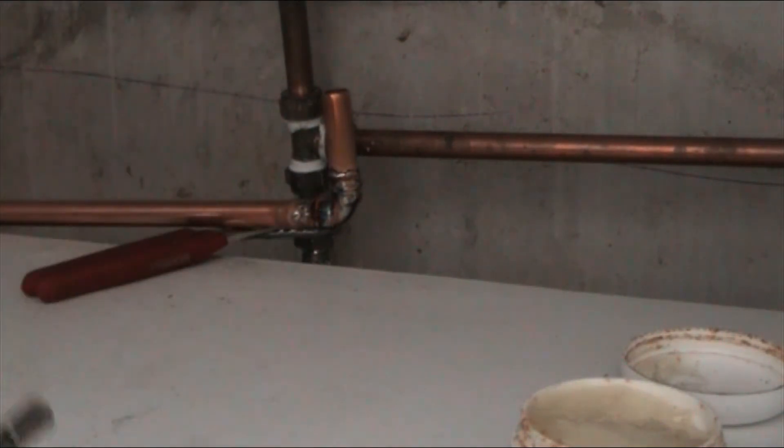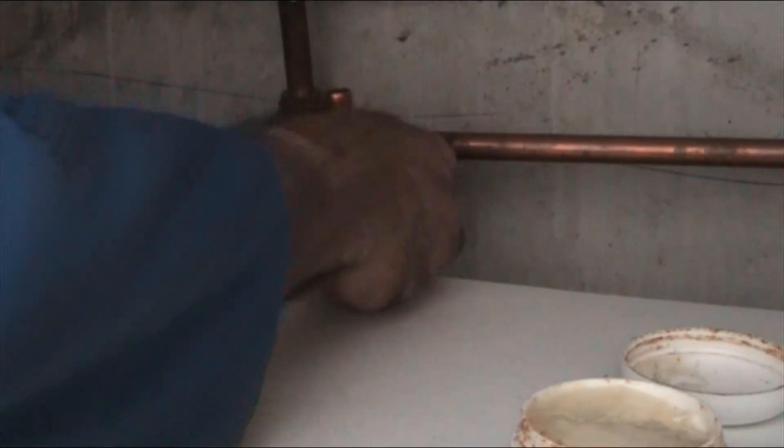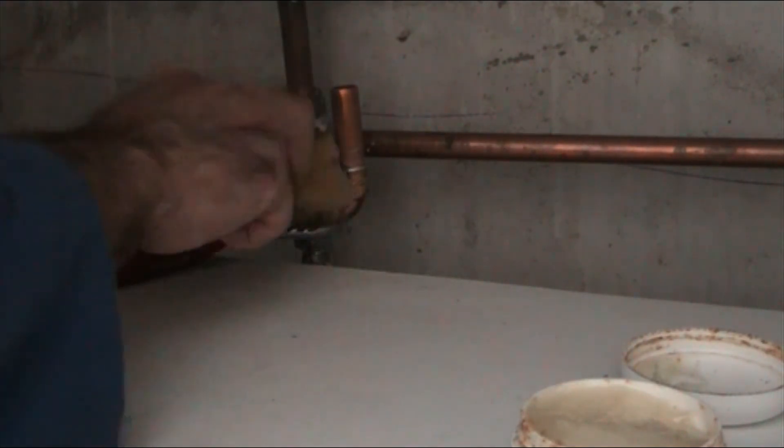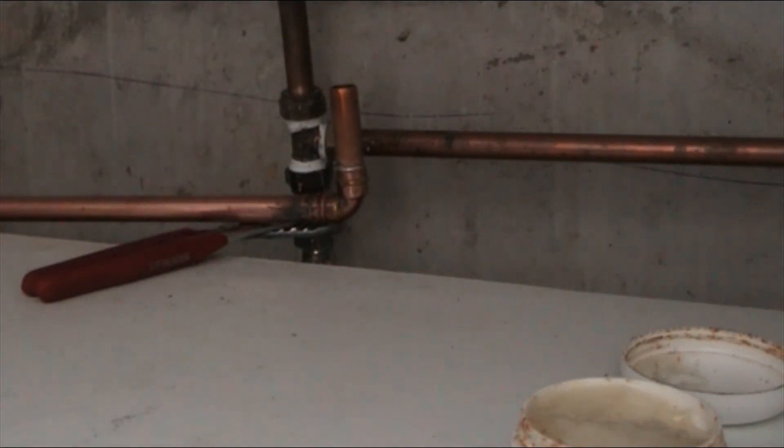Once it's done you get a wet sponge and get all the flux and dirt off because the flux is just going to stain the pipe later on if you don't wipe it. And that's that.